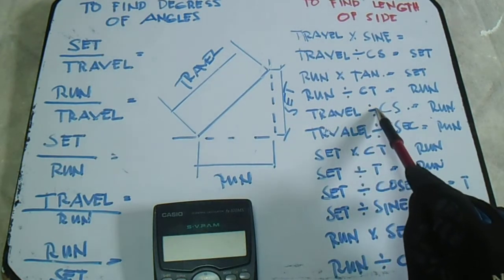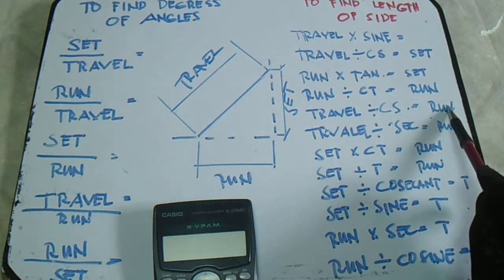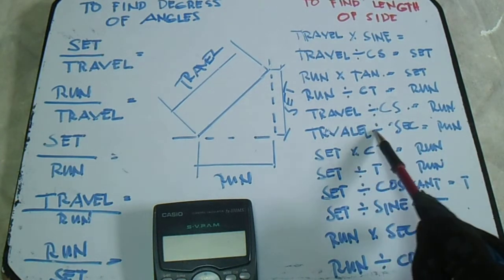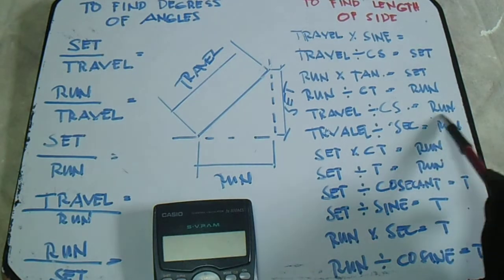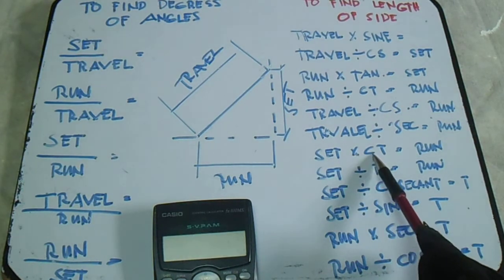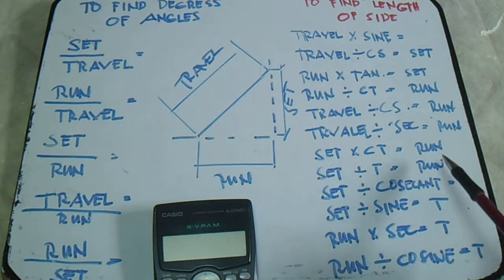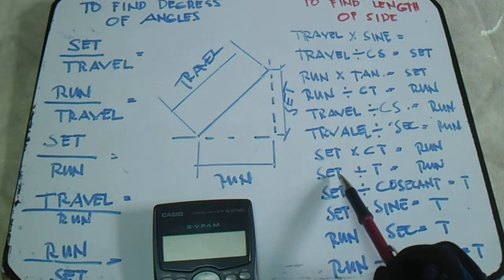Travel divided by secant equals run, and set multiplied by cotangent equals run. Set divided by tangent equals run.